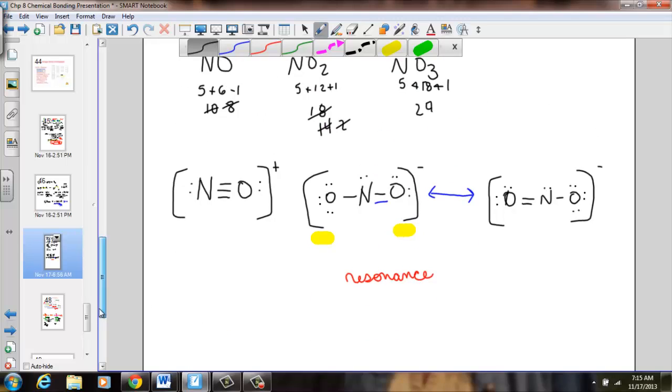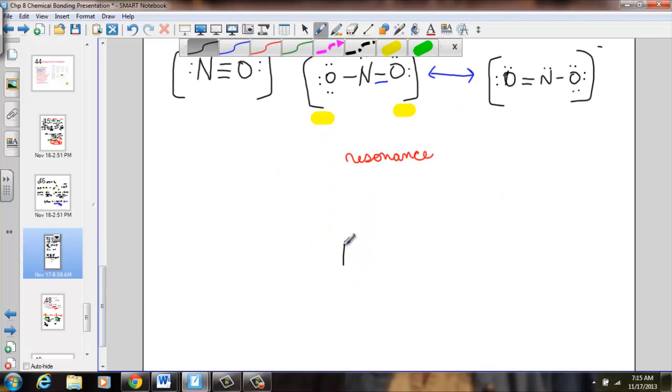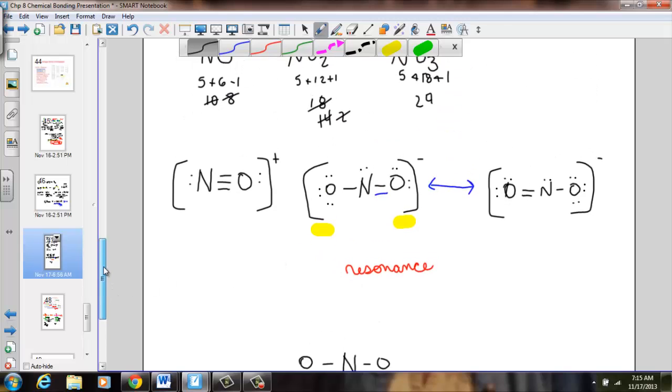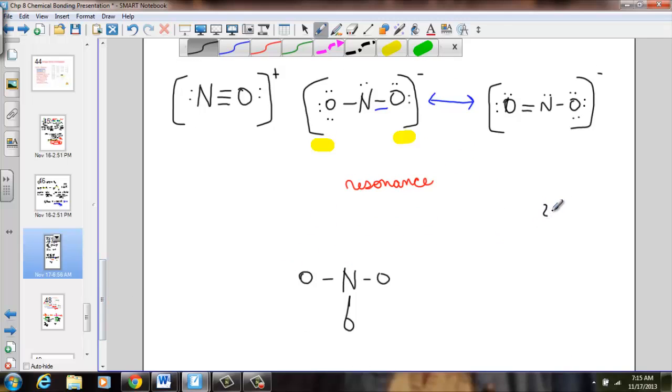And what about that third NO3? N goes in the center. Attach back. And how many have we started with? We had 24. We just used 6, leaving us 18. Filling octets counting 1 through 18. No dots left to place on the nitrogen.